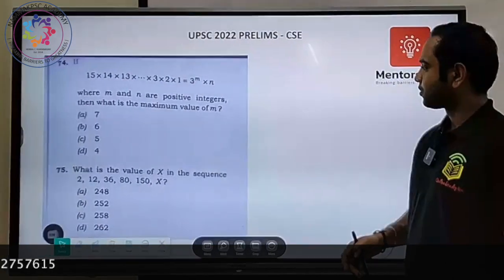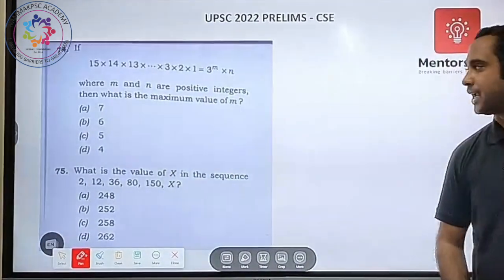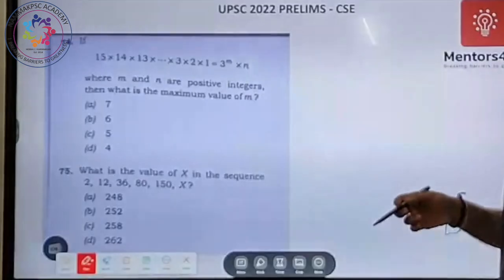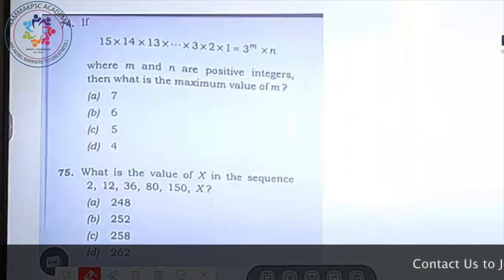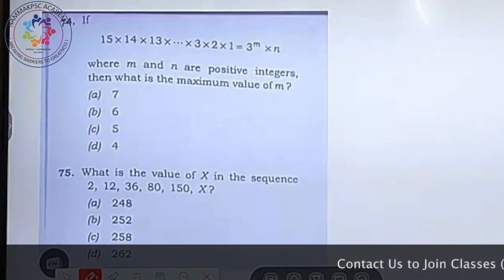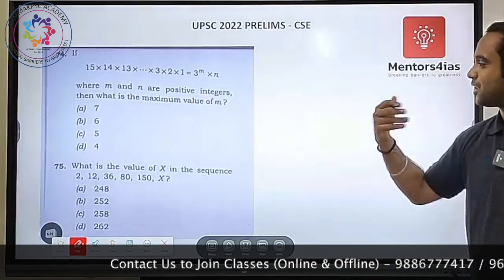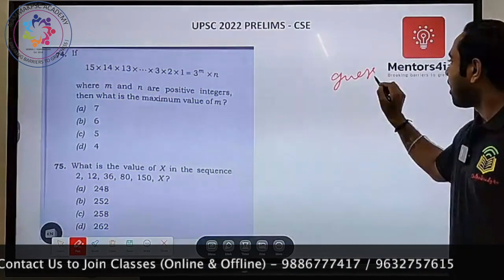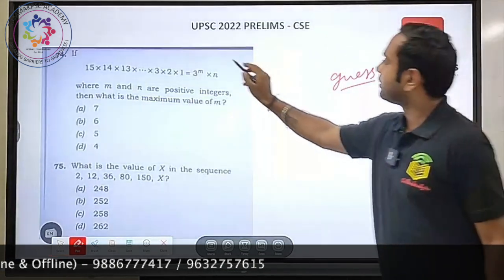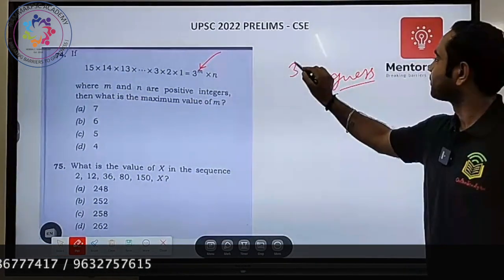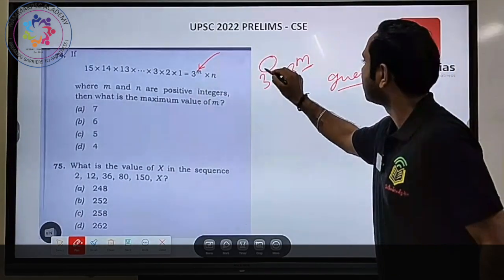Question number 74 (part 2 will cover Q75 onward): 15 × 14 × 13 × ... × 3 × 2 × 1 equals 3^m × n, where m and n are positive integers. What is the maximum value of m? After seeing this, some students just guess. But understand what is being asked: you need to find 3^m, so you must find how many times 3 appears as a factor in 15!.